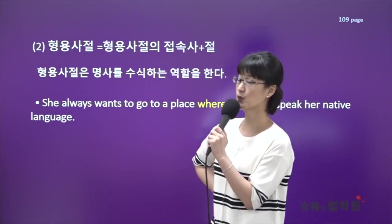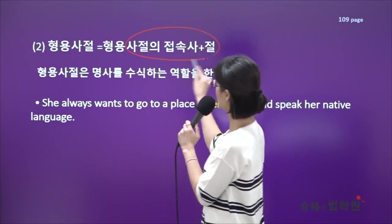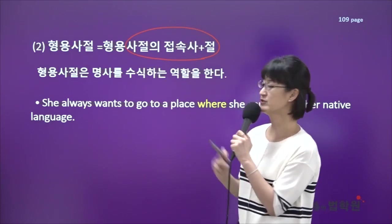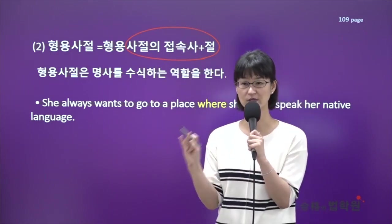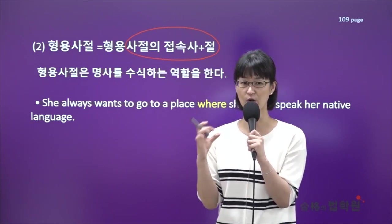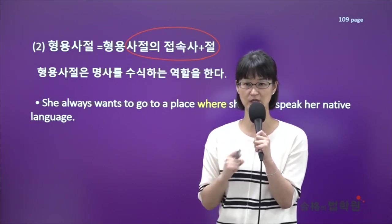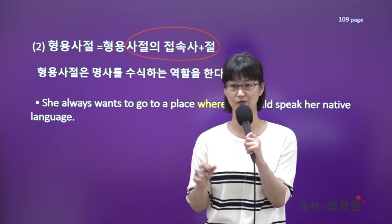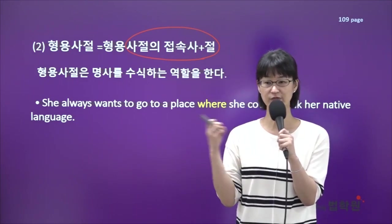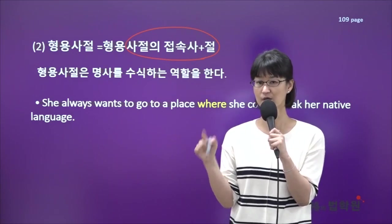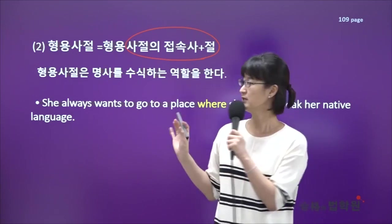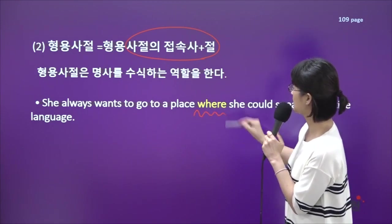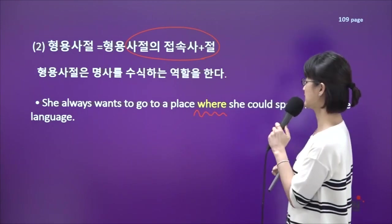두 번째, 형용사절도 형용사절의 접속사와 절이 한 덩어리로 묶인 형태죠. 형용사는 문장에서 보어도 되고 명사수식도 하지만 형용사절, 즉 절의 형태인 형용사는 앞에 있는 명사를 수식하는 역할밖에 못해요. 보어의 역할은 안 됩니다. 형용사절은 문장에서 하는 역할이 딱 하나밖에 없어요.